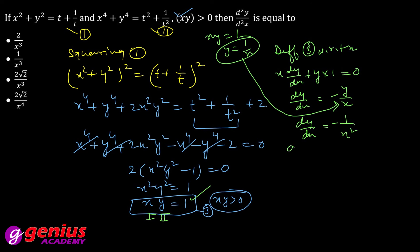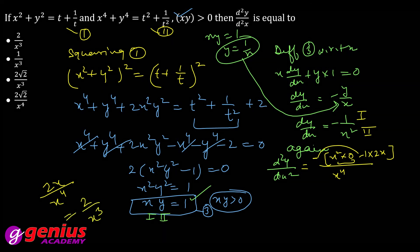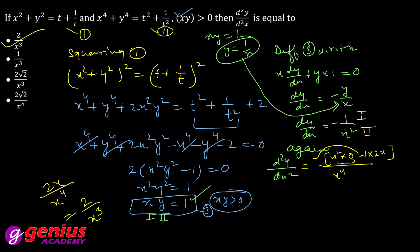Ab again differentiate karte hain d(dy/dx)/dx = d²y/dx². −1/x² ko differentiate karte hain using quotient rule: d²y/dx² = 2x/x⁴ = 2/x³. Yeh aapka final answer hai.